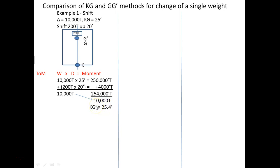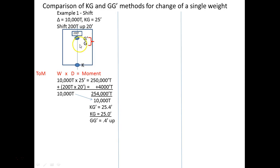Do not get confused: KG-prime means the new KG — 25.4 feet — while the prime symbol here means 'new' not feet. What was our original KG? 25 feet. So how far did the center of gravity move? 0.4 feet up. G was here and moved to here — 0.4 feet upward.